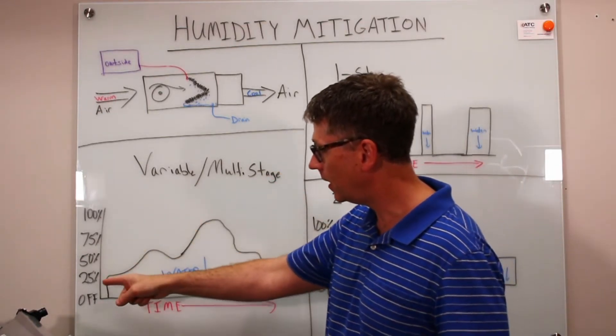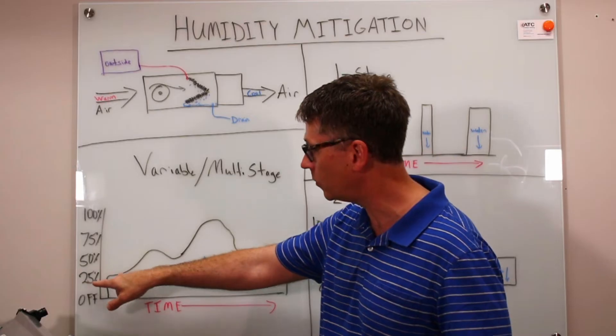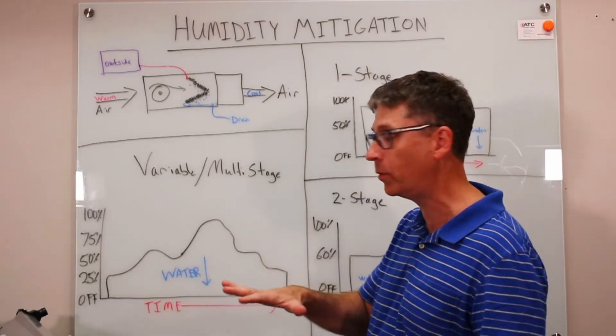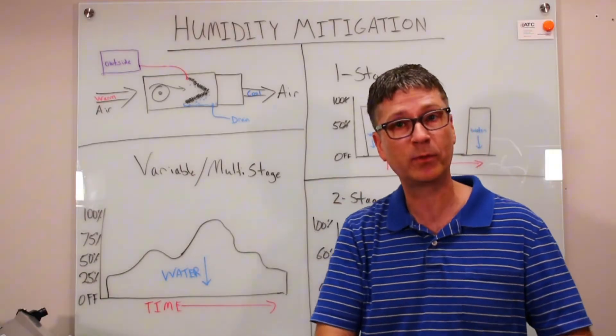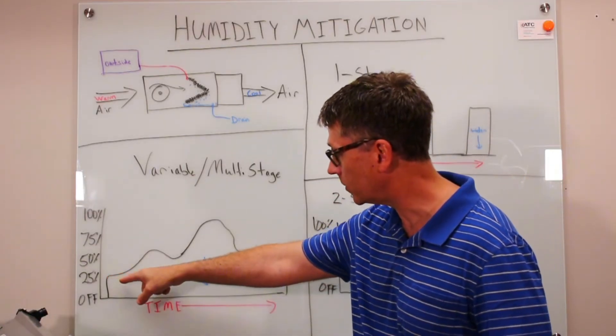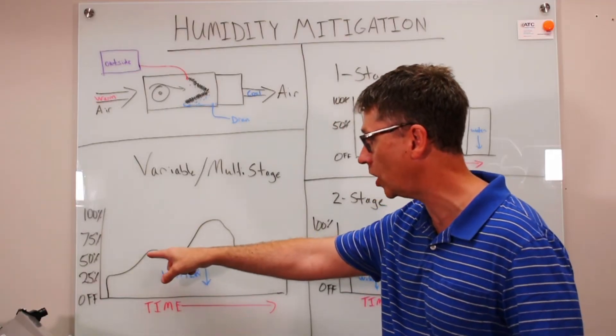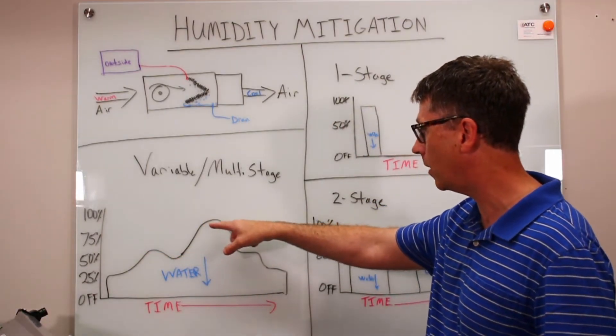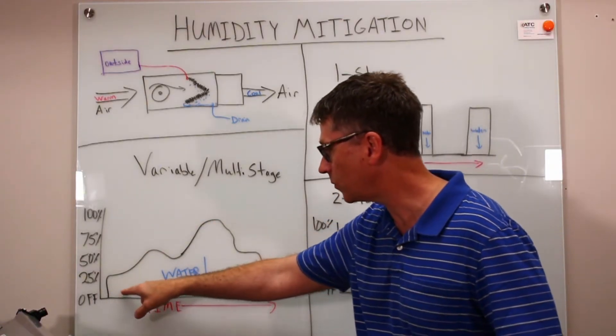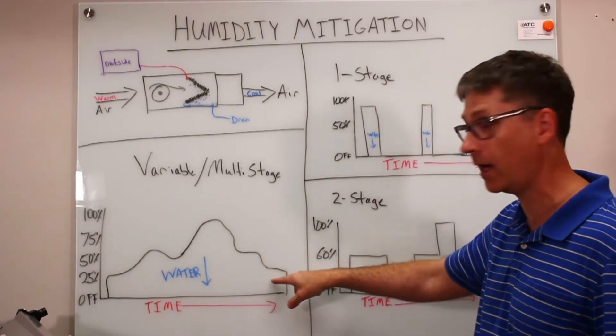Now in this case, it's capable of running anywhere between 25% and 100% of capacity and it varies its output along the way as temperature and conditions call. So it comes on at 25% let's say and it's running and changing that as needed and it goes up. It crests here at about 75%. But you see this? It's running the entire time